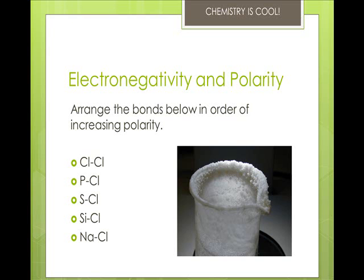Remember that the further apart two elements are in the periodic table, the greater the difference in electronegativity, and the more polar the bond. So if you are going to arrange these bonds in increasing polarity, the order's going to be chlorine-chlorine, because that's completely not polar, sulfur-chlorine, phosphorus-chlorine, silicon-chlorine, and finally, sodium-chloride.